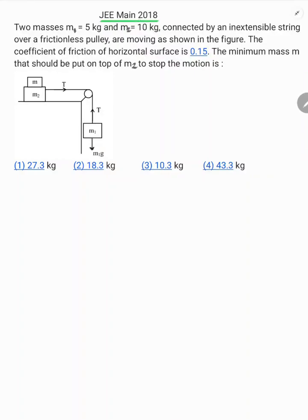Consider a JEE Main 2018 MCQ. Two masses M1 equals 5 kg and M2 equals 10 kg connected by an inextensible string over a frictionless pulley are moving as shown in the figure. The coefficient of friction of the horizontal surface is 0.15. The minimum mass small m that should be put on top of M2 to stop the motion is...